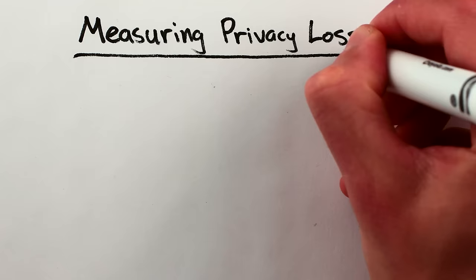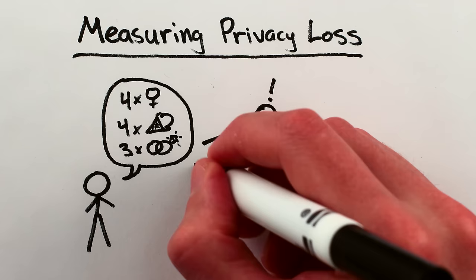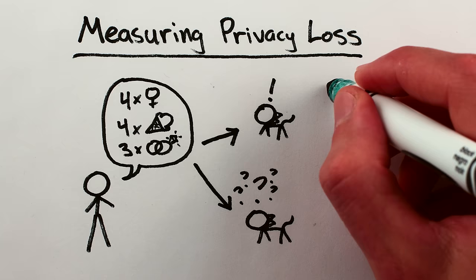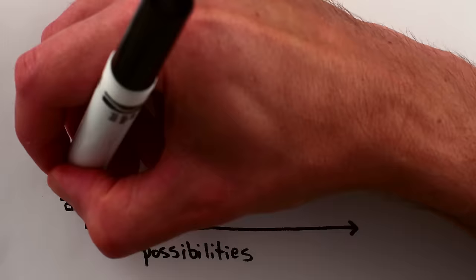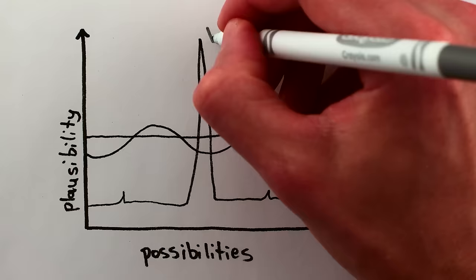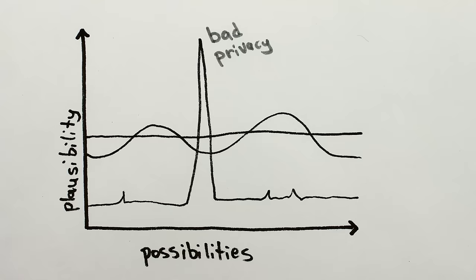The loss of privacy due to the publication of information is described in terms of how confidently an attacker would be able to single out a particular possibility for the true data. Given the published information, are there just a few possibilities for the true data, or are there many, many plausible possibilities for what the true data might be? Essentially, loss of privacy is measured by the prominence of peaks on the plausibility plot, and so the protection of privacy requires policing the possibility for such peaks.